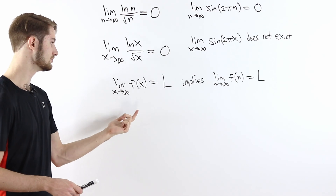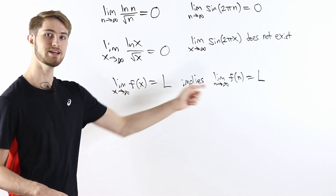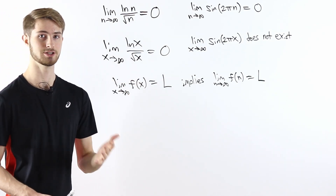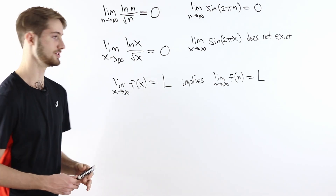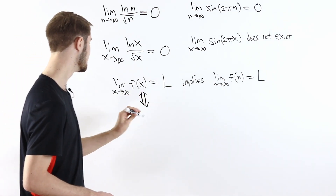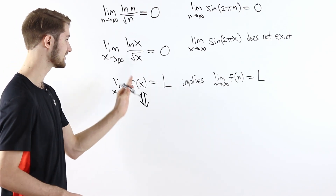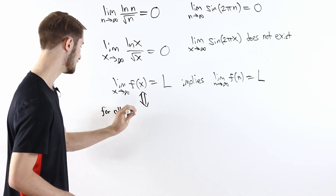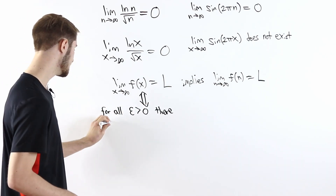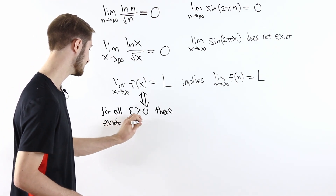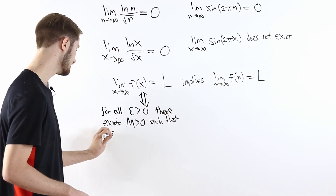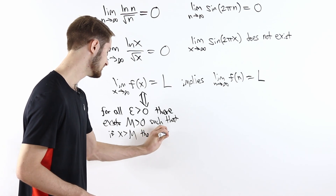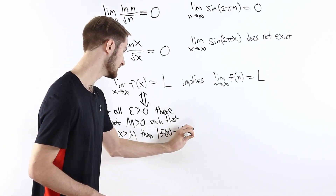To understand why the limit as x goes to infinity implies the limit as n goes to infinity, and why it doesn't work the other way around, we need to remember the epsilon-delta definition of a limit. What it means to say that the limit as x goes to infinity of f(x) equals L is: for all epsilon greater than 0, there exists some number M greater than 0, such that if x is greater than M, then the absolute value of f(x) minus L is less than epsilon.